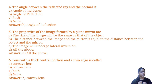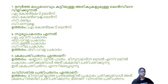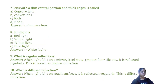A lens with a thick central portion and a thin edge is a convex lens. A lens with a thin central portion and thick edges is called a concave lens.